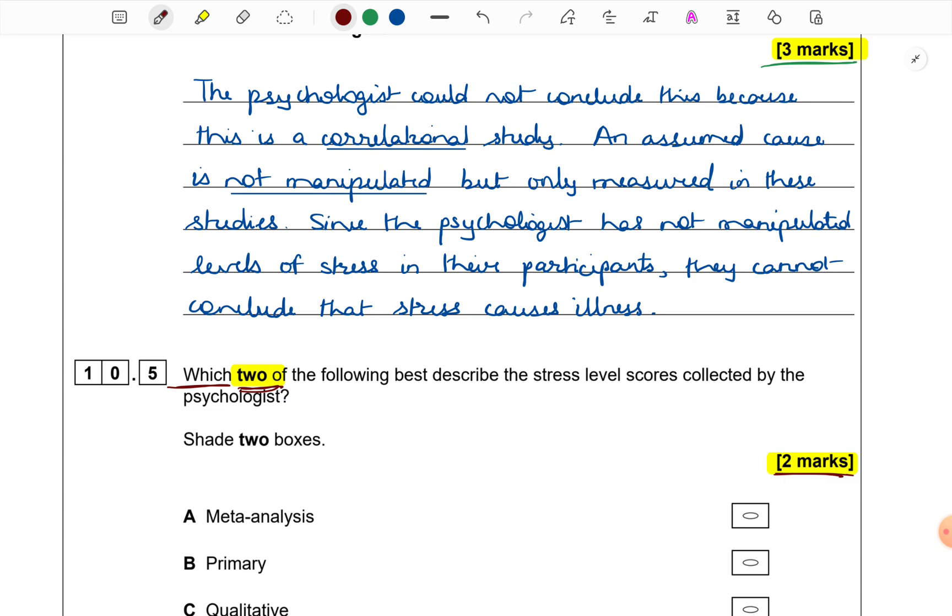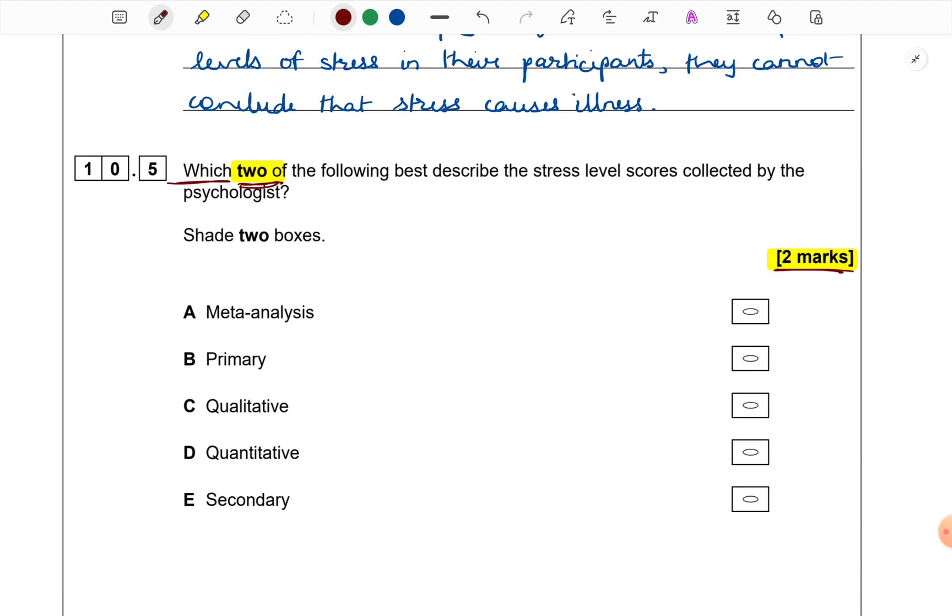Question is simple. It's just important to keep in mind that we need to mark two options. Describe stress level scores. If we consider meta-analysis, meta-analysis is a score that is derived from reviewing effect sizes in multiple studies. In this scenario, which we just read, there was no such suggestion of reviewing a number of studies. So, certainly, it is not meta-analysis.